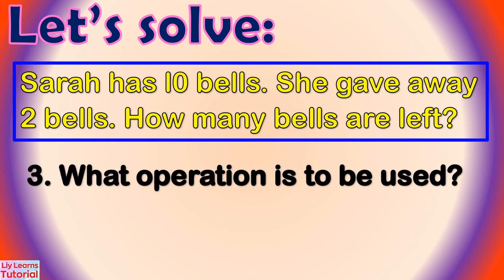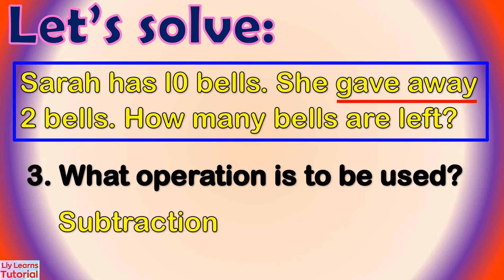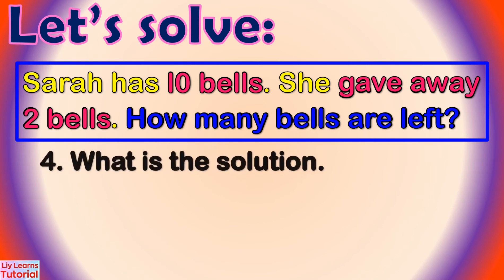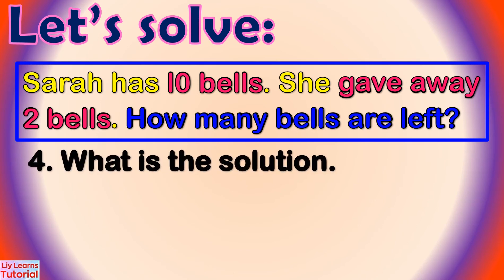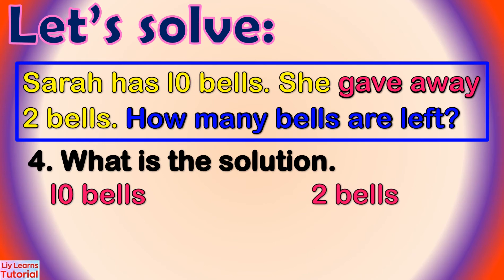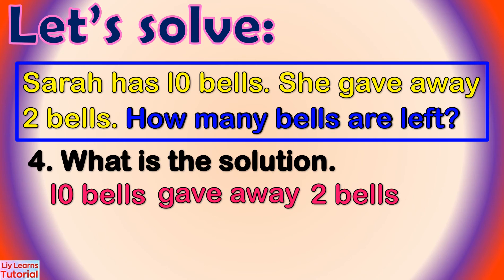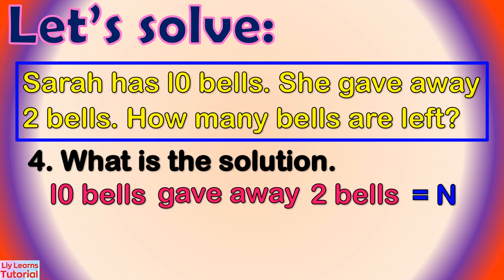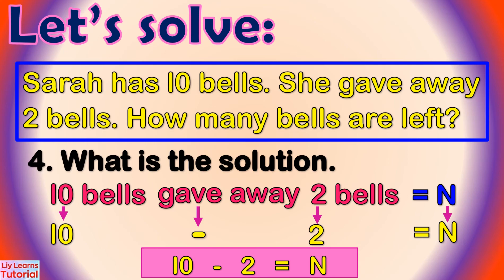Step 2 — Identify what is asked, meaning it is the question in the word problem: how many bells are left? Step 3 — Decide what operation is to be used. The word clue here is 'gave away,' which denotes subtraction. Step 4 — Write the solution or number sentence. We put together the given, the operation, and what is asked: 10 minus 2 equals n.